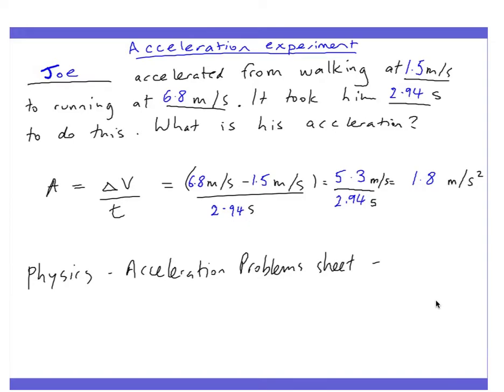So I've got this lad, Joe. We found out how fast he walked. So we did his speed by doing distance over time. And it turns out he walks at one and a half metres a second. And then when I got on a sprint, he sprints at 6.8 metres a second. And now I told him to walk, and then I told him to go and to start sprinting. And it basically took him 2.94 seconds to go from his walking speed up to his top speed.